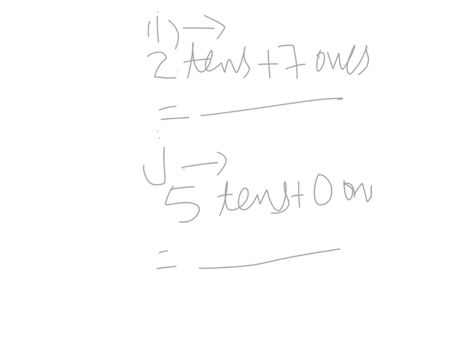Part i is two tens plus seven ones. Two tens equal twenty and seven ones equal seven, so twenty plus seven equals twenty-seven. Part j is five tens plus zero ones. Five tens equal fifty, and fifty plus zero equals fifty.